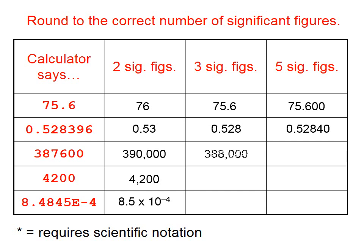This next one rounded to three significant figures is 388,000. To five significant figures, we're going to run into a problem. There is only one way to report this to five significant figures, and that is you have to use scientific notation.